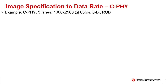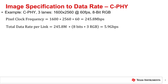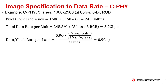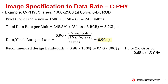Using the same example, we can do the calculations for a C-PHY system with three data lanes of trios — now we only need 9 signals. The calculation for pixel clock frequency and data rate per link is the same. For the data rate per lane, we need to multiply by our encoding scheme, which in C-PHY is 7-to-16. In this example, the data rate per lane needed would be just under 1 giga-symbol per second. The recommended design bandwidth would be between 1.3 and 2.6 giga-symbols per second, which is 40% lower than the D-PHY case.